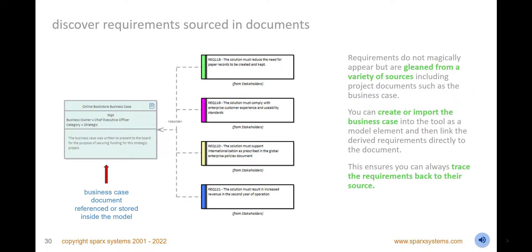Discover requirements sourced from documents stored inside or outside the repository. Bridge the gap between these text-based sources of project information and the requirements derived from them as your project evolves and implementation work begins. You can trace any part of the model back to the source of the requirements by using tools such as the matrix and traceability window.